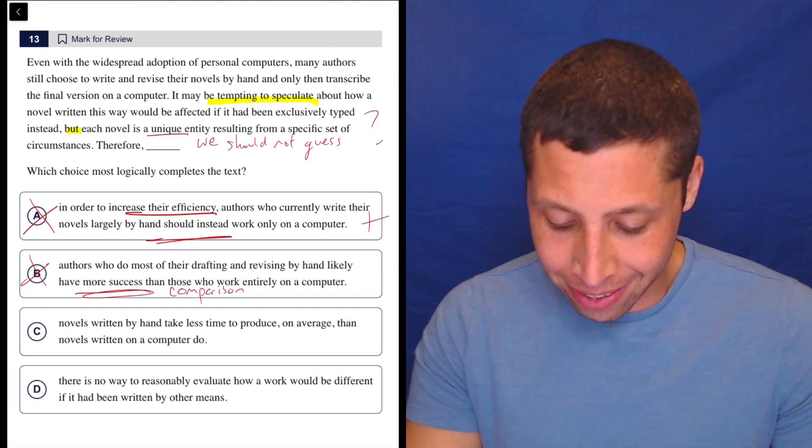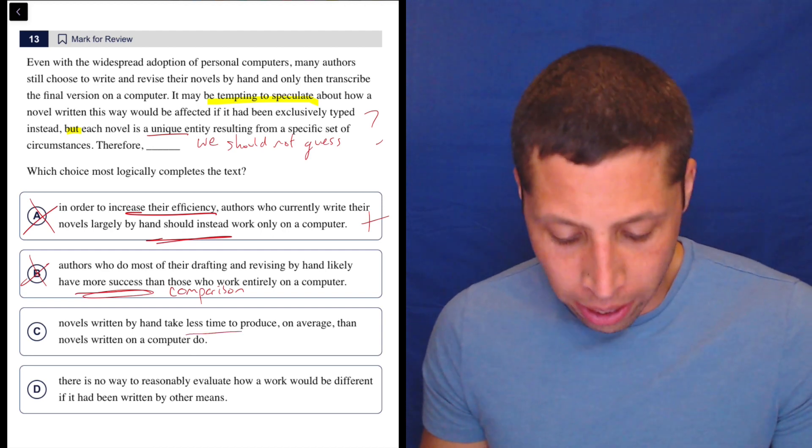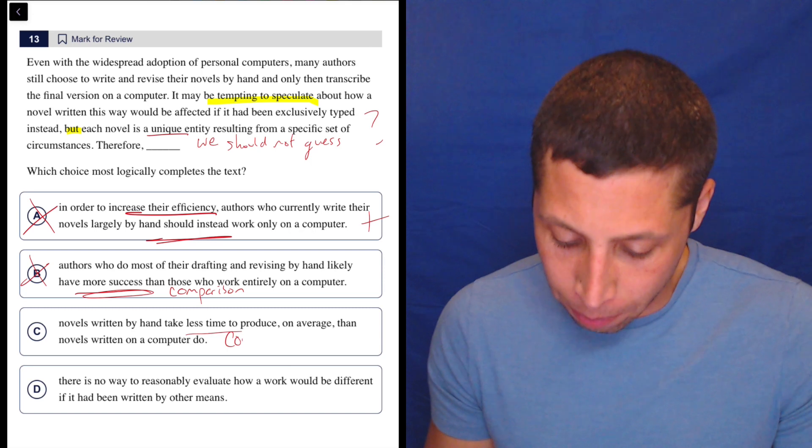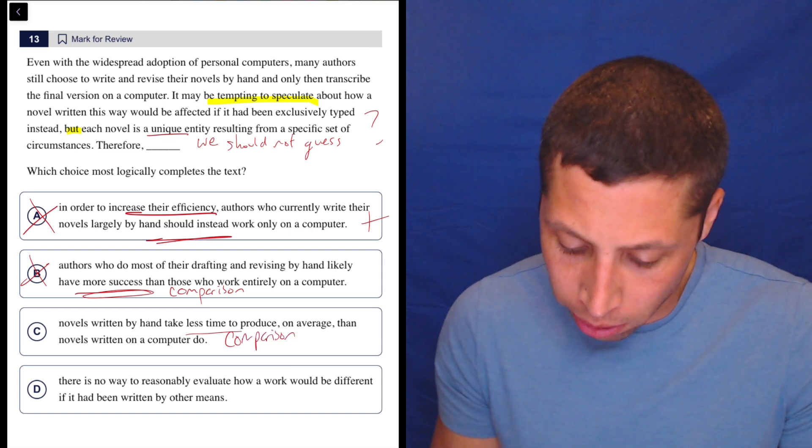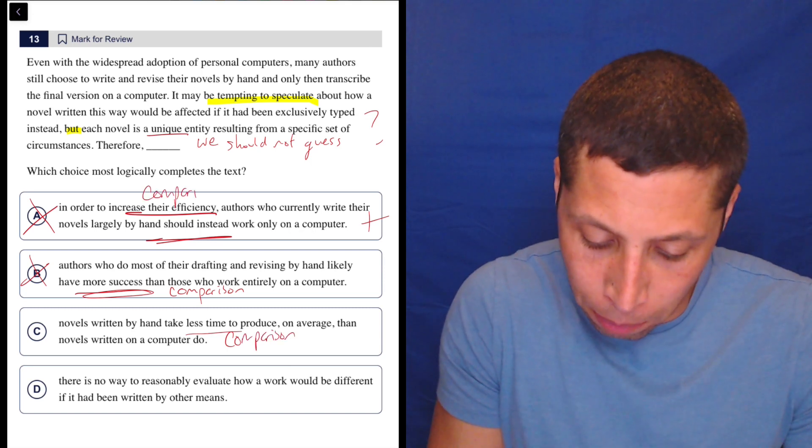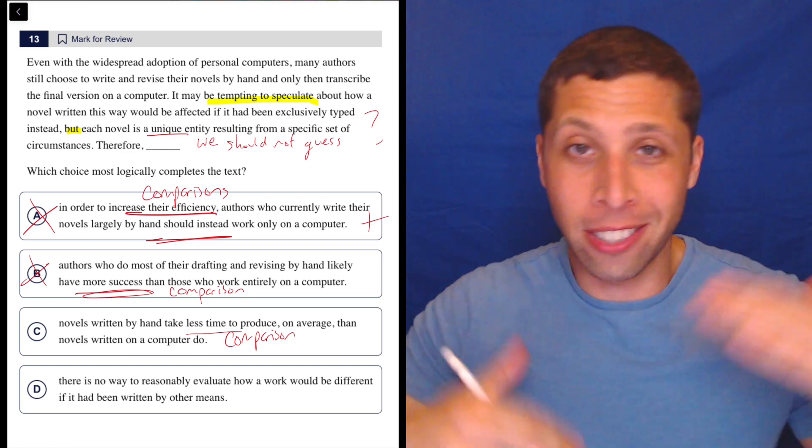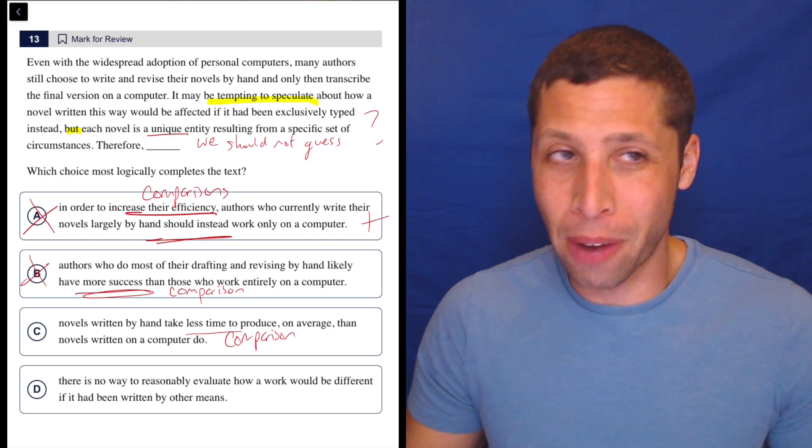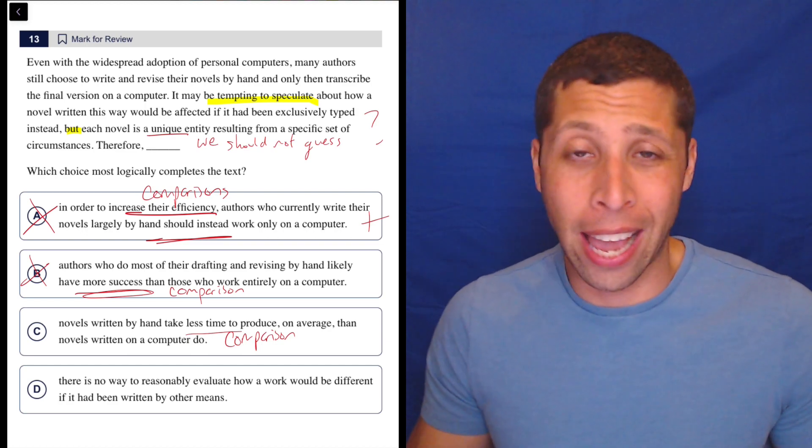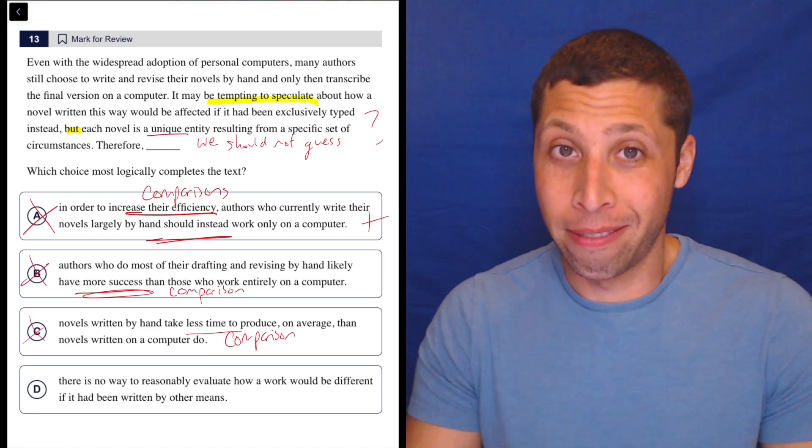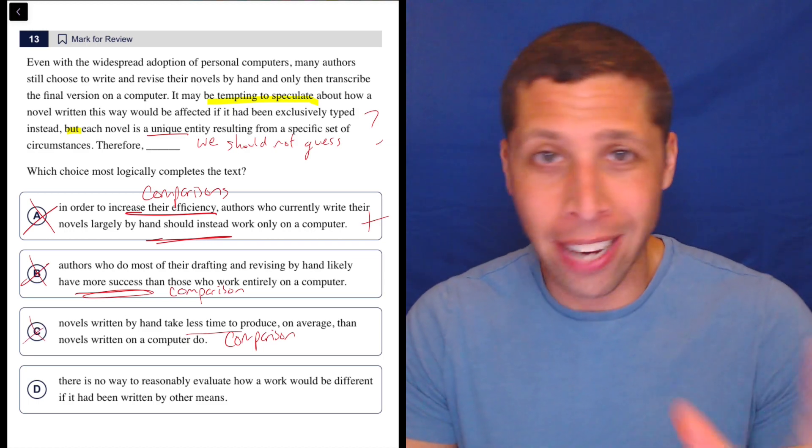C, novels written by hand take less time to produce on average than novels written on a computer. Again, comparison, right? I mean, in fact, all of these choices really are comparisons. They're trying to get us to say that one thing is better. And maybe you have a personal preference. Like I wouldn't want to write a novel by hand. That seems excruciating, but that's not the point of passage. So don't bring your own ideas and biases in.